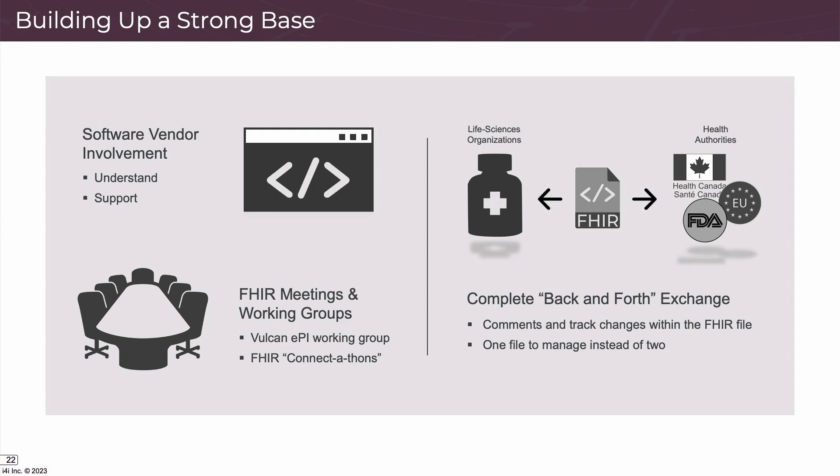At these working group meetings, we look at the technical aspects of FHIR, and the group is working on the second iteration of the FHIR EPI implementation guide. At i4i, we come from a global labeling perspective, so we're able to leverage our deep knowledge of SPL, XMLPM, the EU QRD templates, etc., to give feedback on what's needed to completely support these and other types of package inserts, and the business rules associated with each one in FHIR EPI.